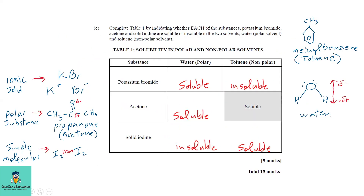Part c: complete Table 1 by indicating whether potassium bromide, acetone, and solid iodine are soluble or insoluble in water (a polar solvent) and toluene (a non-polar solvent). Water is polar because it has a negative side where the oxygen atom is and a positive side where the H atoms are.